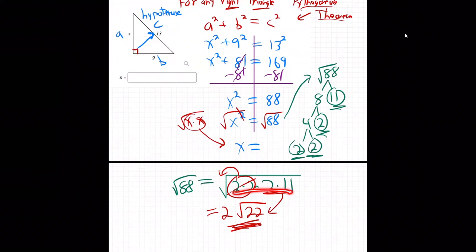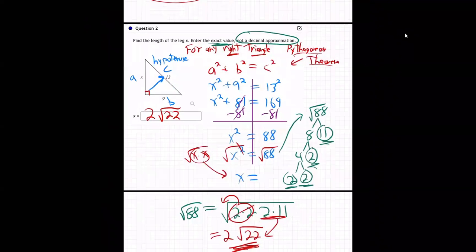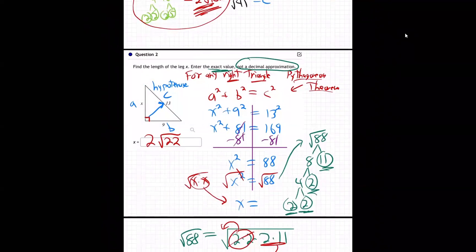Three twos and an 11, and then it's a two for one ship out. That's what roots always are. One two comes out, the other two and 11 have to stay, because there's not two more twos or two 11s. That's 2 root 22, so that's our answer. 2 square root 22, that's the X, that's the missing side, the left side, there we go.